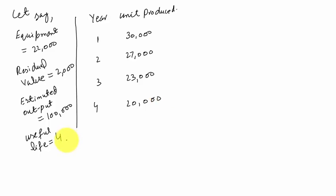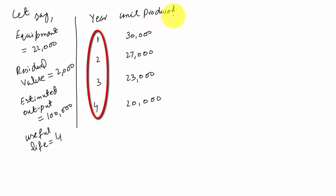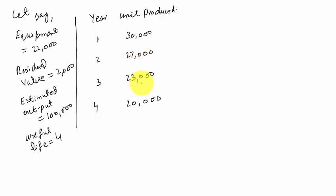We have 4 years. The units produced in each year are: 30,000 in the first year, 27,000 in the second year, 23,000 in the third year, and 20,000 in the fourth year.